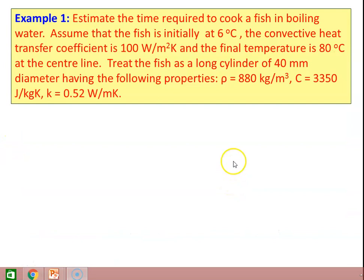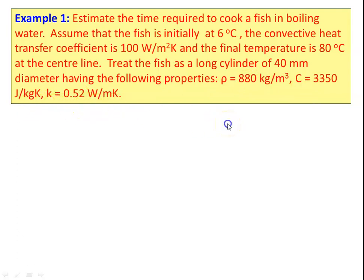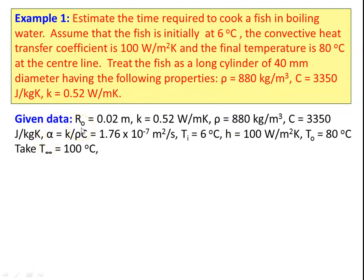Numerical example 1: Estimate the time required to cook a fish in boiling water. Assume the fish is initially at 60°C, the convective heat transfer coefficient is 100 W/m·K, and the final temperature at the centerline is 80°C. Treat the fish as a long cylinder of 40 mm diameter with: ρ = 8080 kg/m³, C = 3350 J/kg·K, and thermal conductivity K = 0.52 W/m·K. Given data: radius R₀ = 0.02 m, K = 0.52 W/m·K, ρ = 8080 kg/m³, C = 3350 J/kg·K.